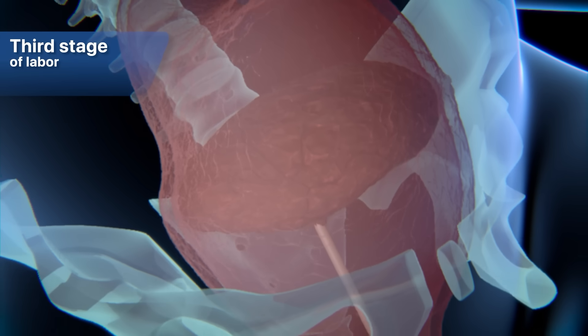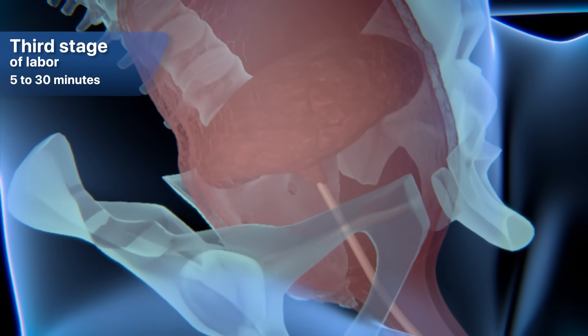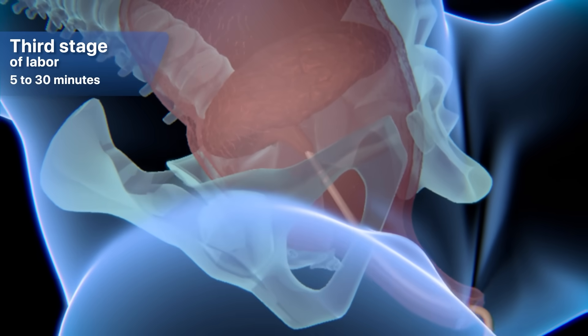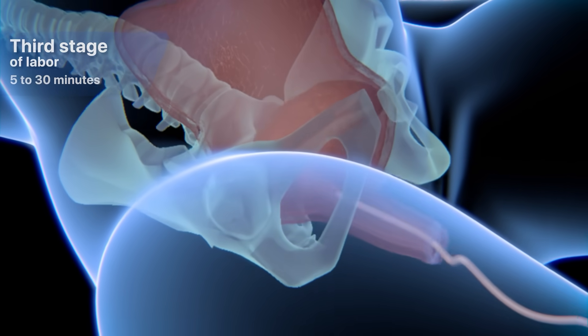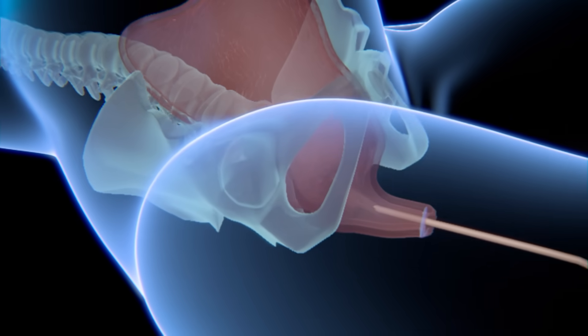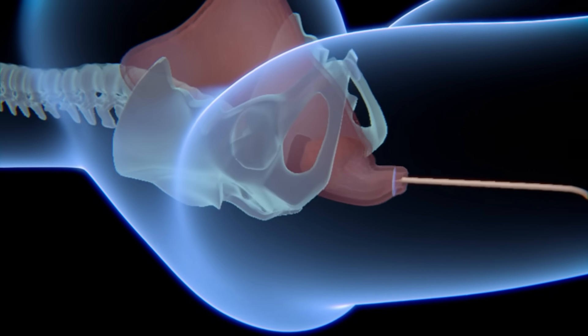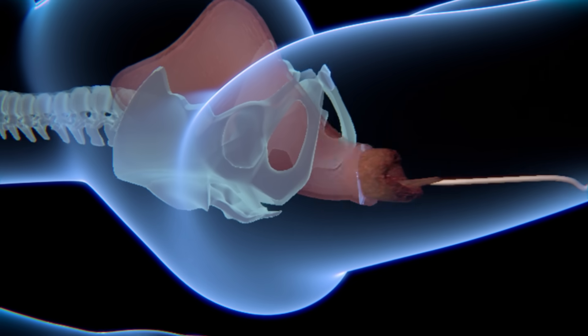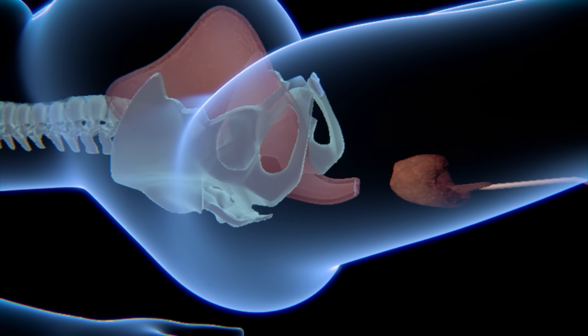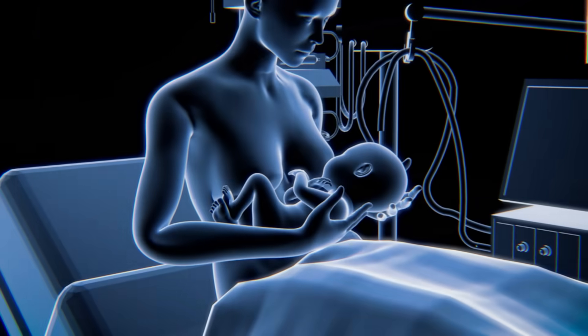In the third stage of labor, which can last from 5 to 30 minutes, the mother will feel gentle contractions that help push the placenta out of the uterus. During this stage, mother and baby may begin to bond through skin-to-skin contact and breastfeeding.